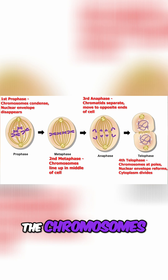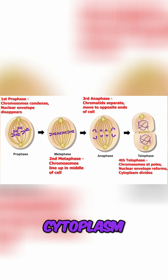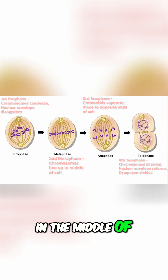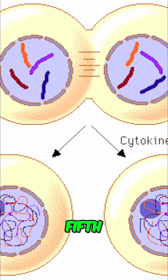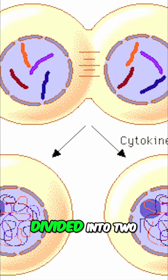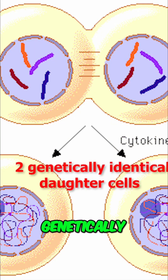Fourth, in telophase the chromosomes are at the poles, the nuclear envelope begins to reform, and the cytoplasm begins to divide in the middle of the cell. Fifth, in cytokinesis the cell is divided into two daughter cells that are genetically identical to the parent cell.